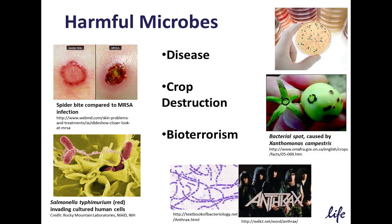Harmful microbes could be bacteria that cause infection and disease in humans, such as methicillin-resistant Staphylococcus aureus, commonly known as MRSA, which can cause skin infections not readily treated by some antibiotics. Another example is Salmonella typhimurium, which causes gastroenteritis in humans. Harmful microbes can also cause disease in plants, such as Xanthomonas campestris, which causes bacterial spot and destruction of tomato crops. Harmful microbes can also be organisms used in bioterrorism, such as Bacillus anthracis, the producer of the anthrax toxin.